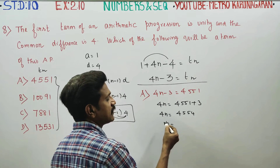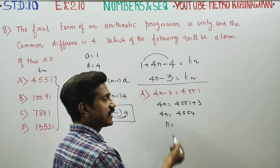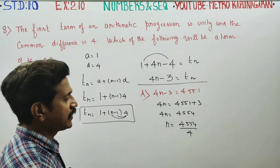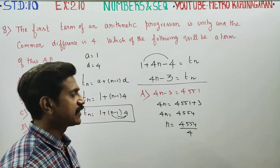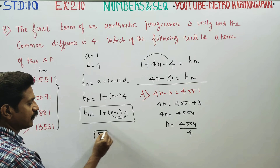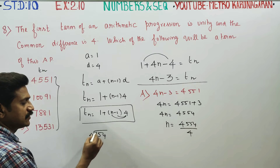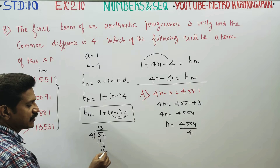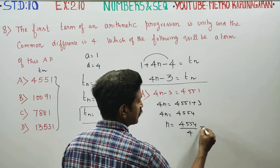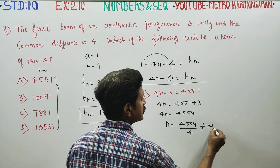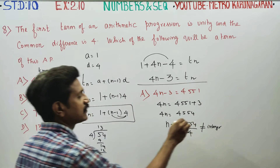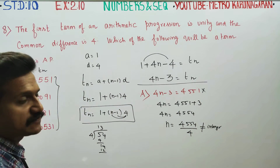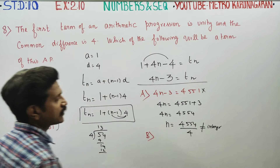Since 54 divided by 4 is not an integer, 4551 is not a term of the AP. Option A is not equal to an integer, so option A is eliminated. We move on to option B.